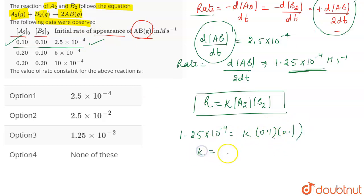So, what you are going to get? K is equal to 1.25 into 10 to the power minus 4 divided by 10 to the power minus 2. So, this will become K is equal to 1.25 into 10 to the power minus 2.